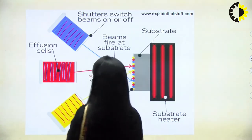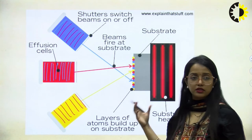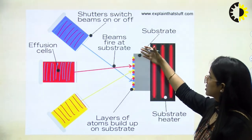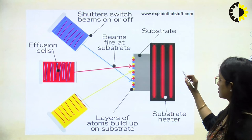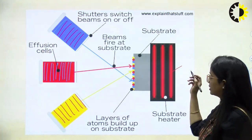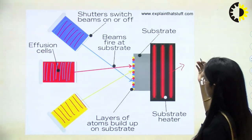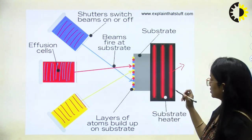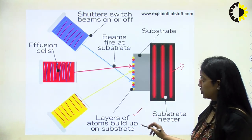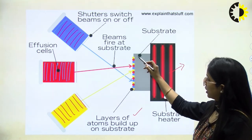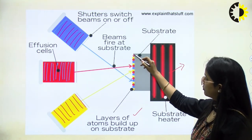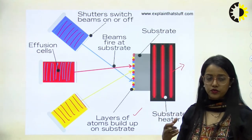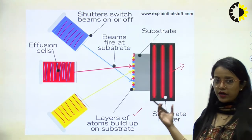All three different kinds of material will eject out of the effusion cells and settle. This is the susceptor — actually the holder heater — which accounts for temperature balance. We can see that the layer of atoms builds up on the substrate and very precise control can be attained on these beams fired at the substrate.